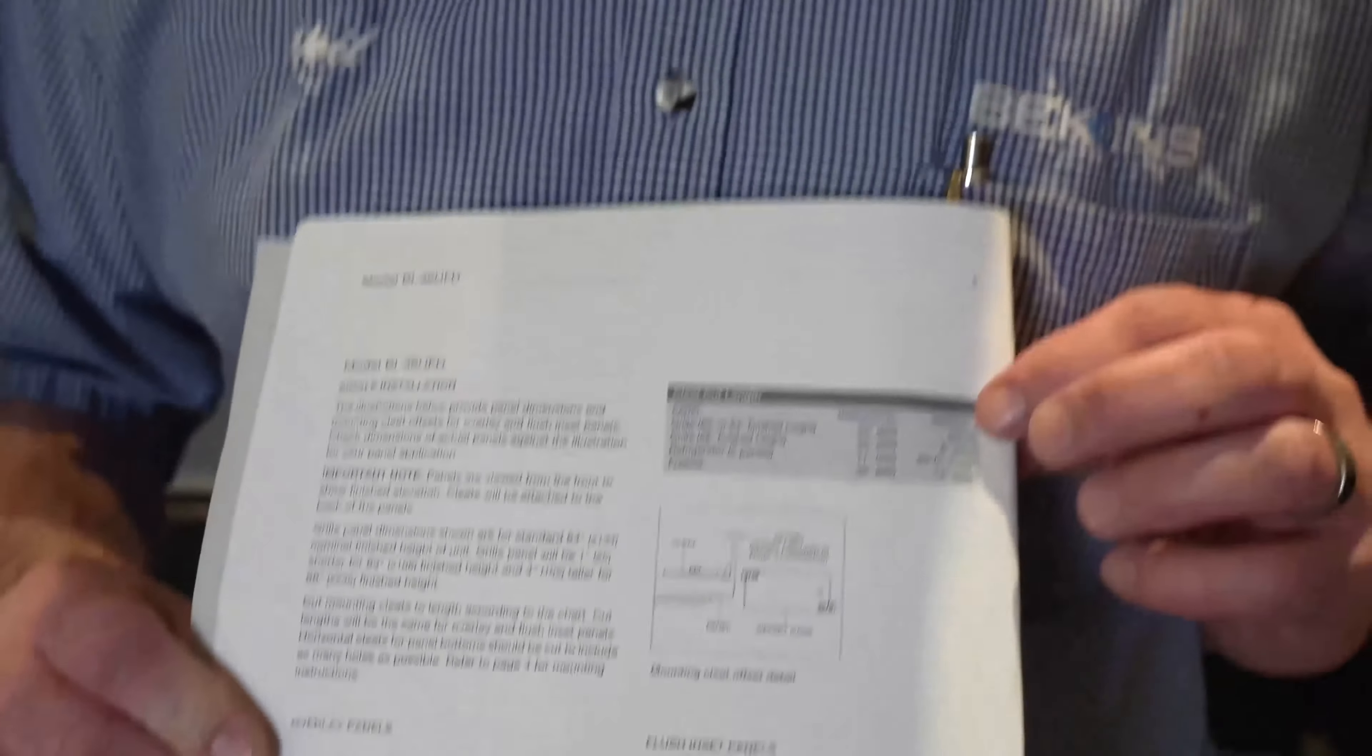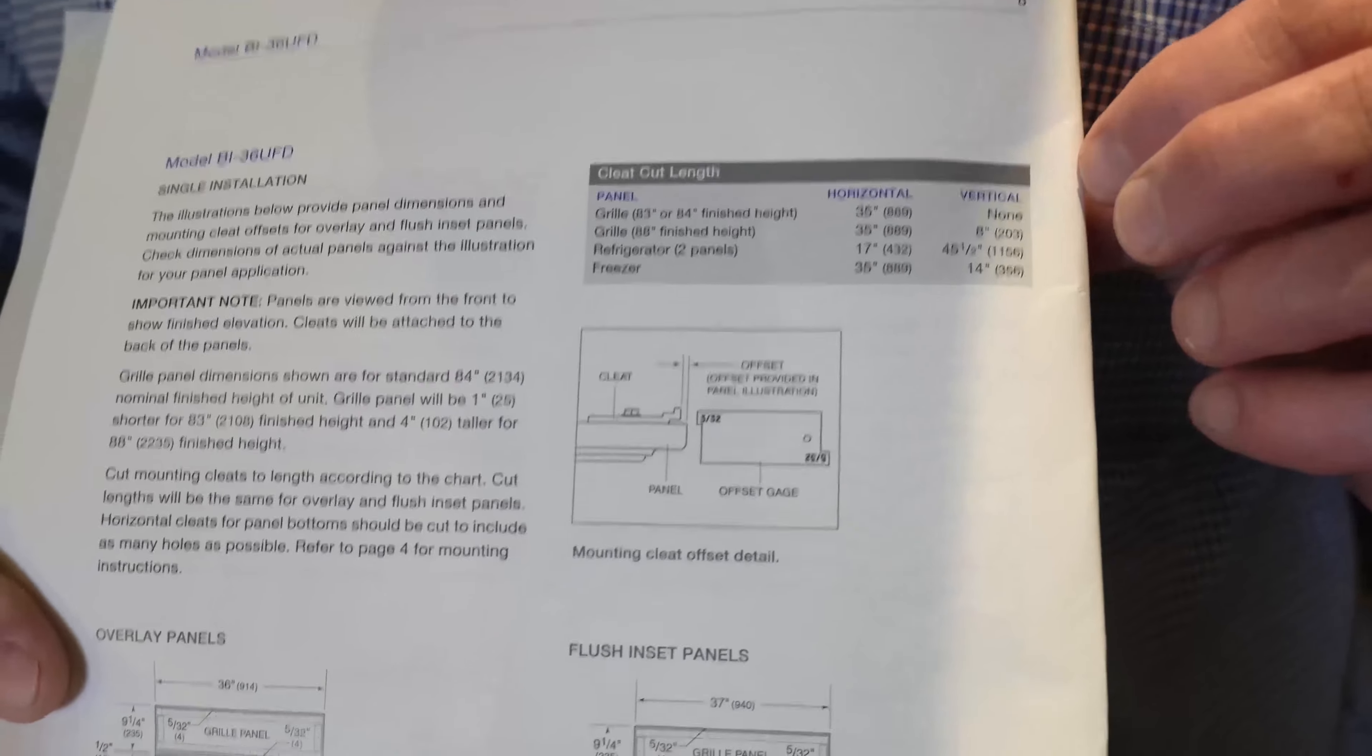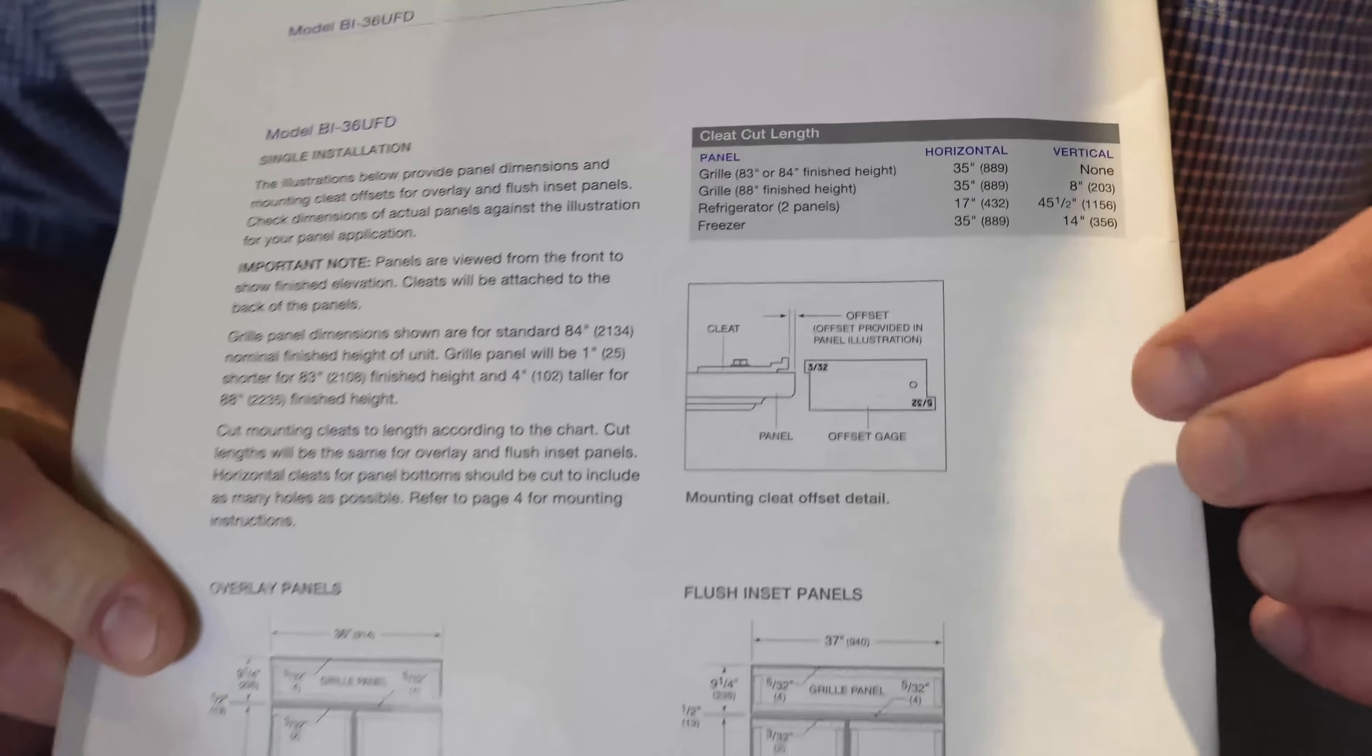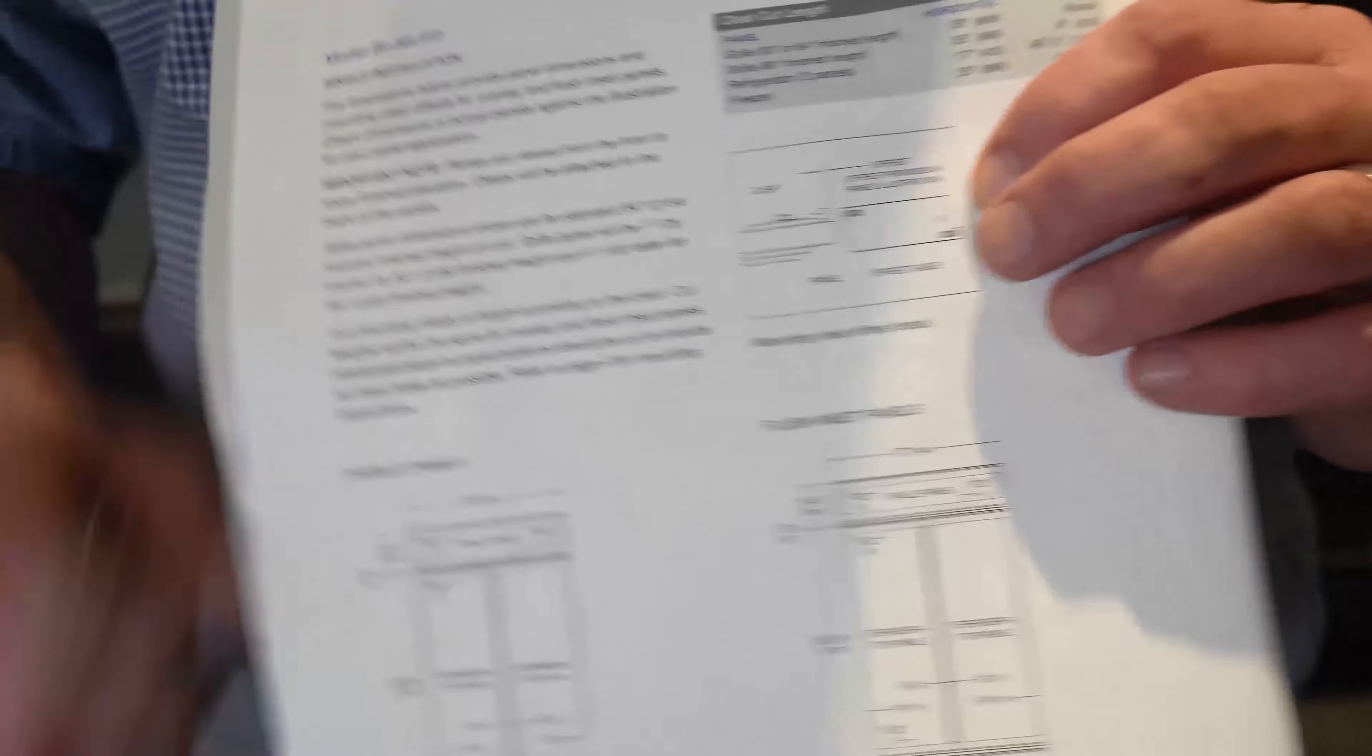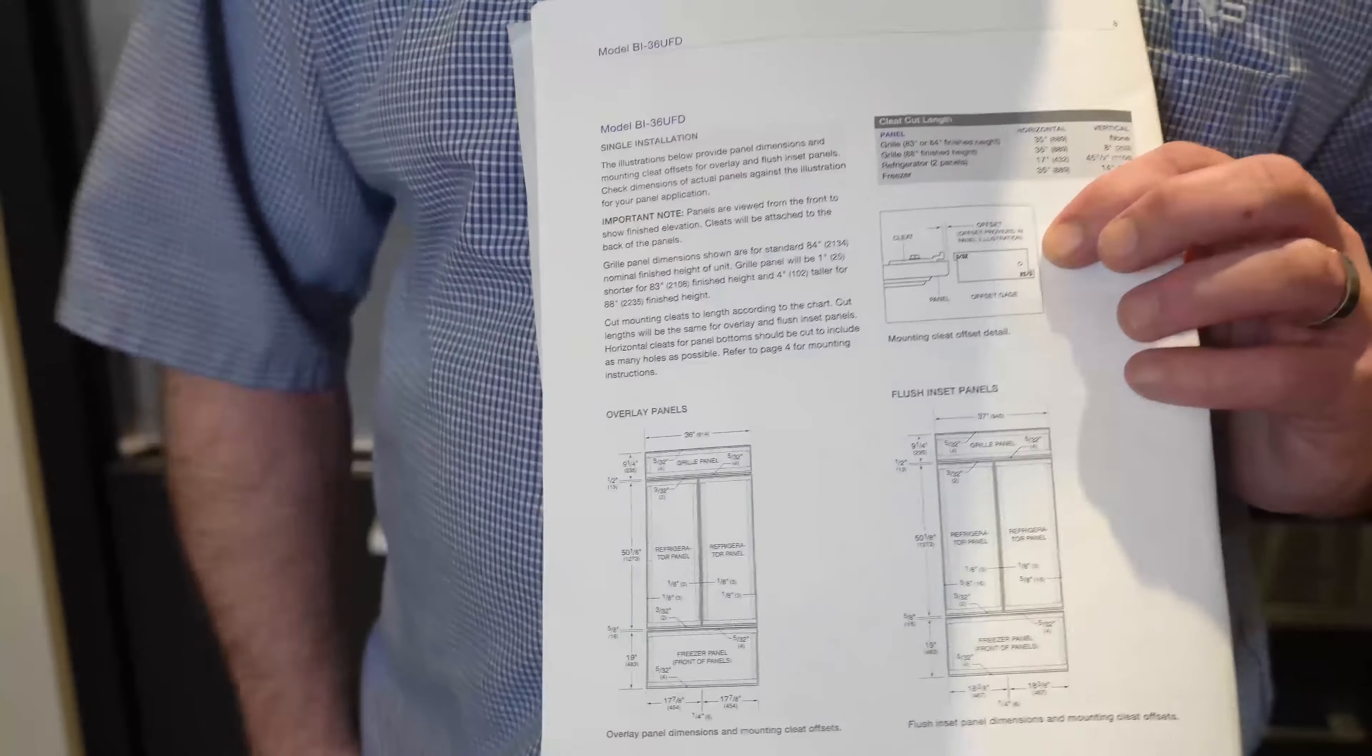It also tells you up top what size the panels are supposed to be in order for your setup. So you can cut them, and it also shows the little tool that Sub-Zero provides to be able to space it out properly, depending on which setup you have and which side of the door you're working on.